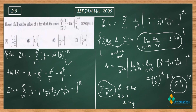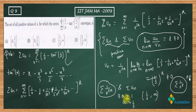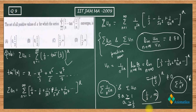The series converges when 3a is greater than 1, which means a must be greater than 1/3. So the interval is (1/3, infinity). It cannot be closed at 1/3 because at a = 1/3 we get summation 1/n, which is the divergent harmonic series.